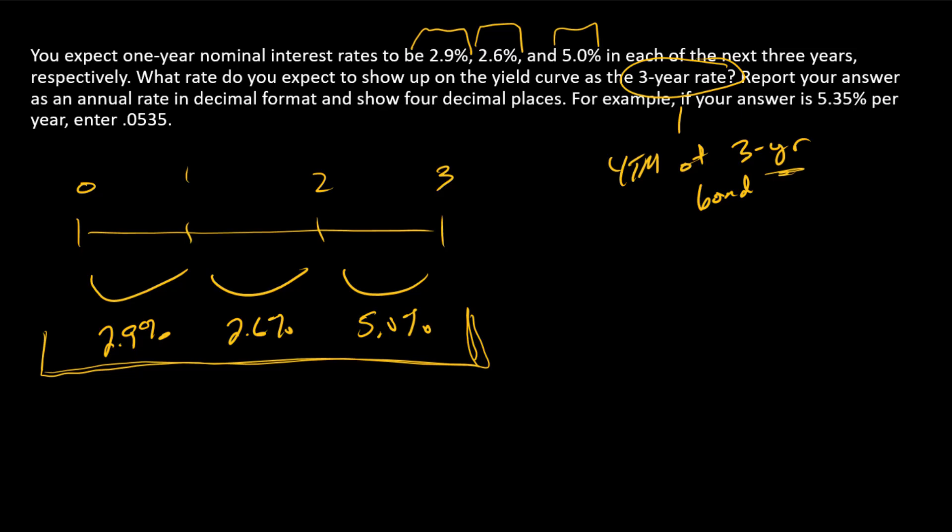We want to think about what an investment at these three one-year rates would look like. So 1.029 in the first year, multiply by 1.026 to take our investment through the second year, then multiply by 1.05 to take it through the third year.